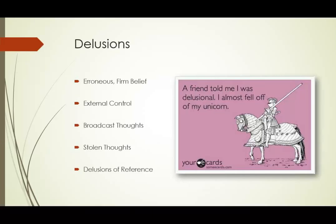Here we're going to start with a few of the aspects of schizophrenia. We're going to start with delusions, hallucinations, disorganized speech and behavior. First, delusions. A delusion is an erroneous belief that is fixed and firmly held despite clear contradictory evidence. It's a disturbance in the content of the thought. It's counterfactual — in other words, it's not true.